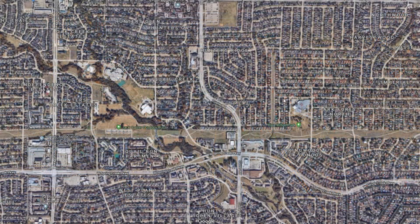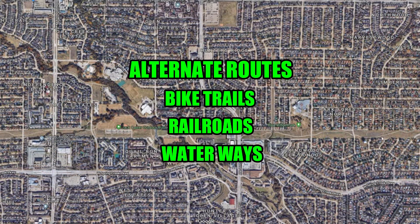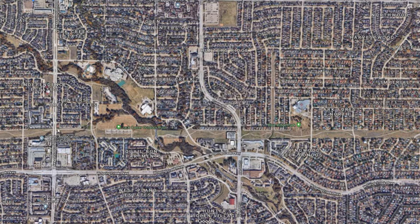If you can't use the roads, consider bike trails, railroads, and waterways. You can see this thin white line here is actually a bike path, and you can see it divides the subdivisions. If you have bikes, it's a great way to make up time.